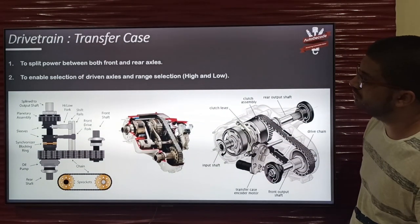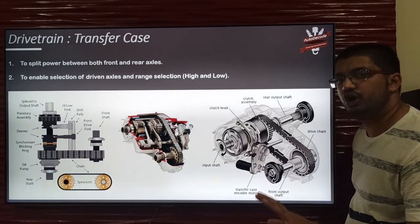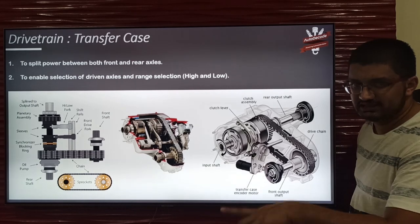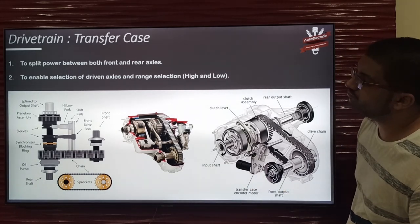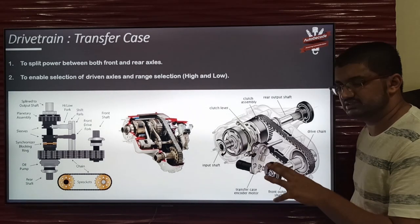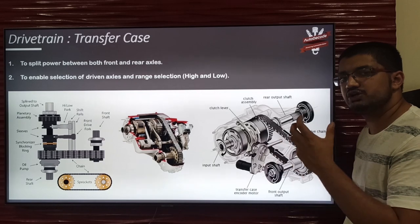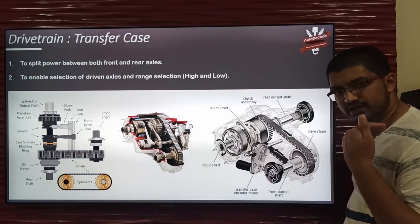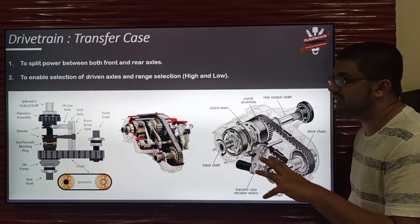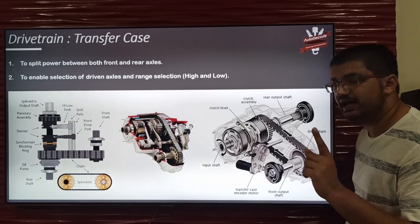The next component is the transfer case. The transfer case is not seen in all drivetrains — it is a particular component of a four wheel drive layout, meaning all four wheels are driven. The transfer case splits the power between the rear and front axle, and also gives the option to select whether you want only the rear axle driving or both the rear and front axles driving. It also has the function of selecting two ranges: high and low.